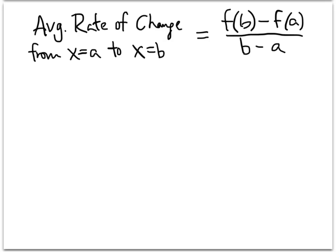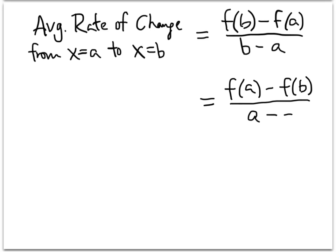What's important to keep in mind is that on the top, b comes first, and on the bottom, b comes first and a comes second. It's really important to keep that order the same. Now, it's okay to get these mixed up — if we instead write f(a) minus f(b), all we have to do differently is make sure the order on the bottom is also switched. So it's okay to write f(a) minus f(b) divided by a minus b — that's the same fraction, just written two different ways.